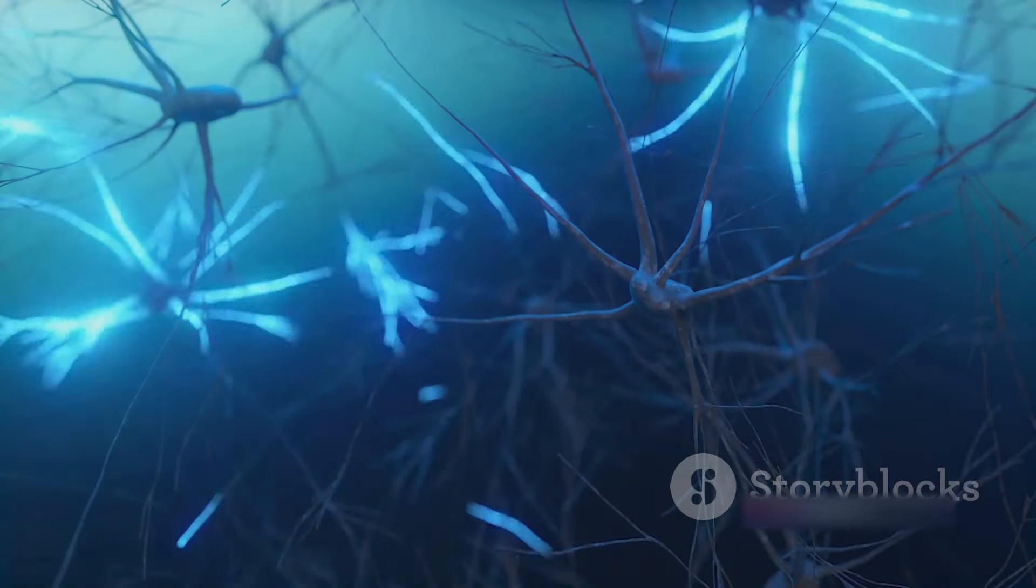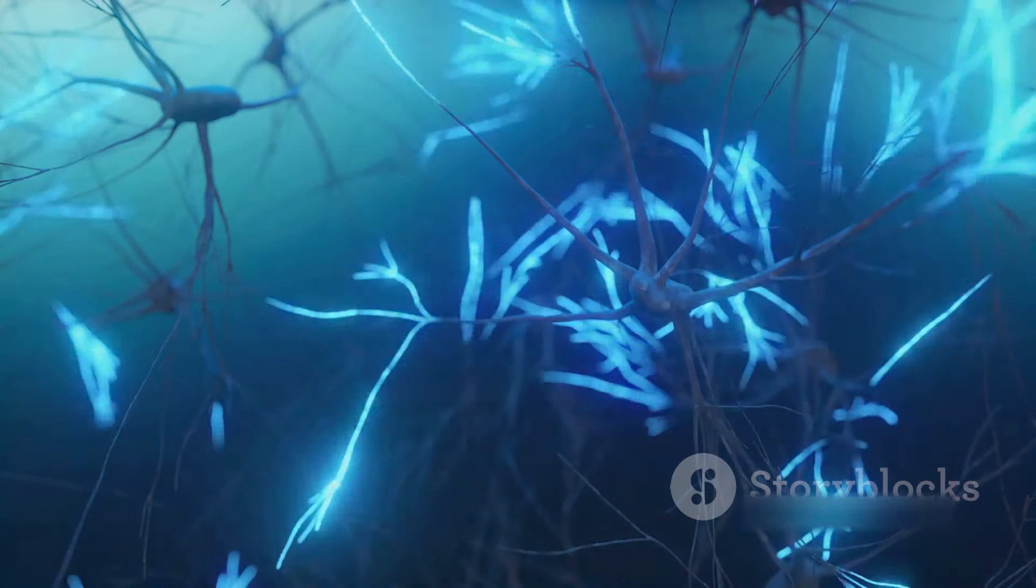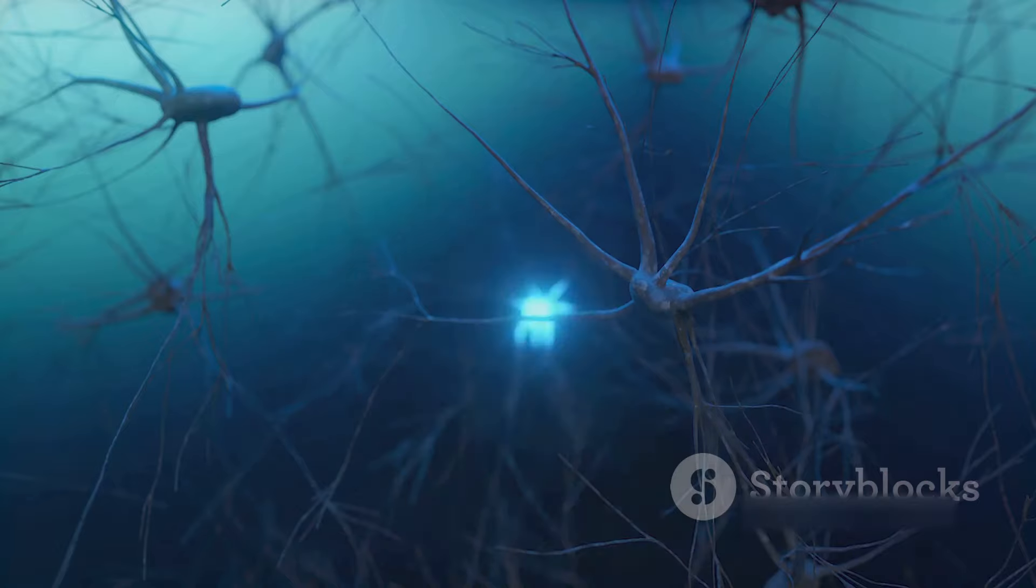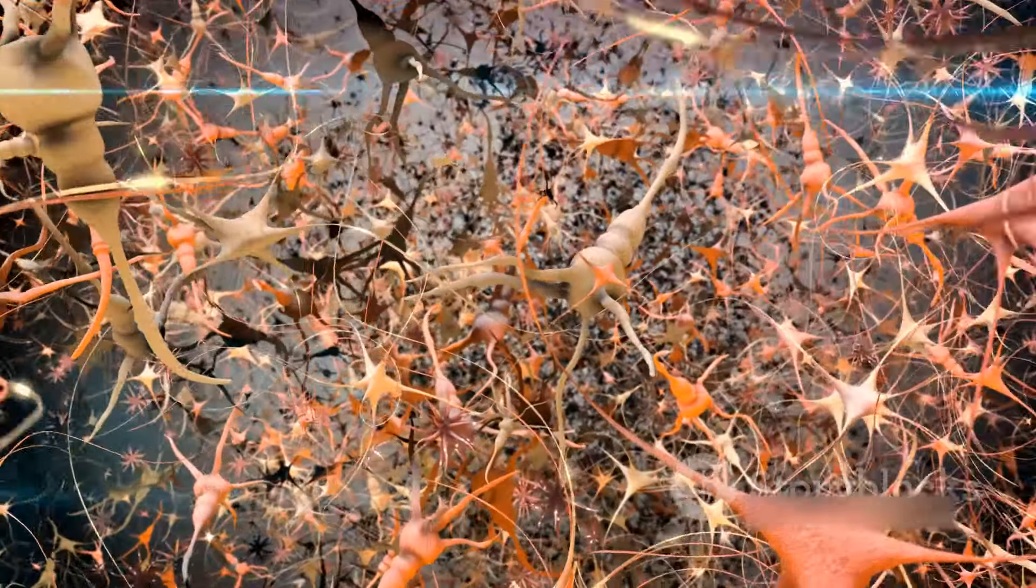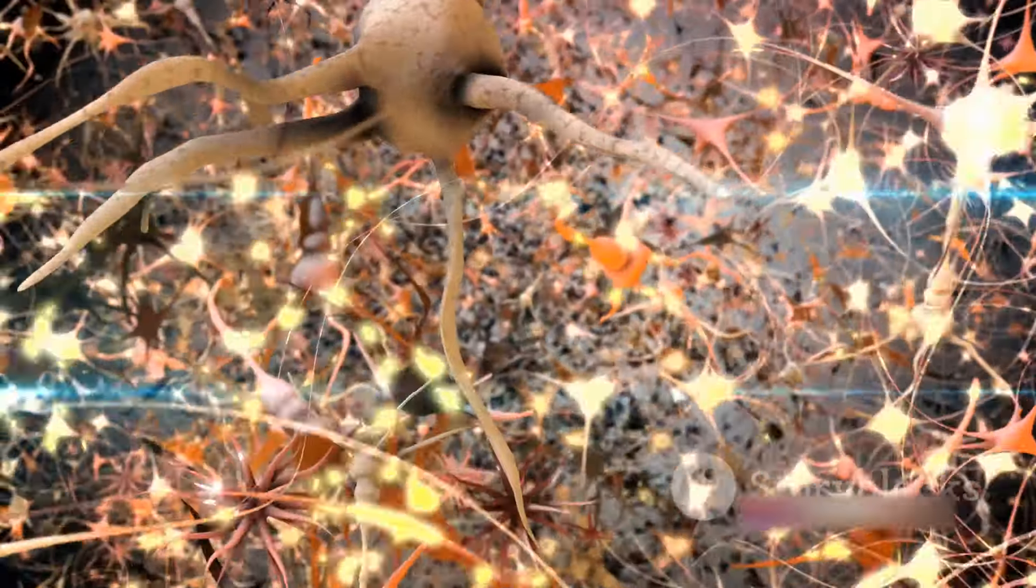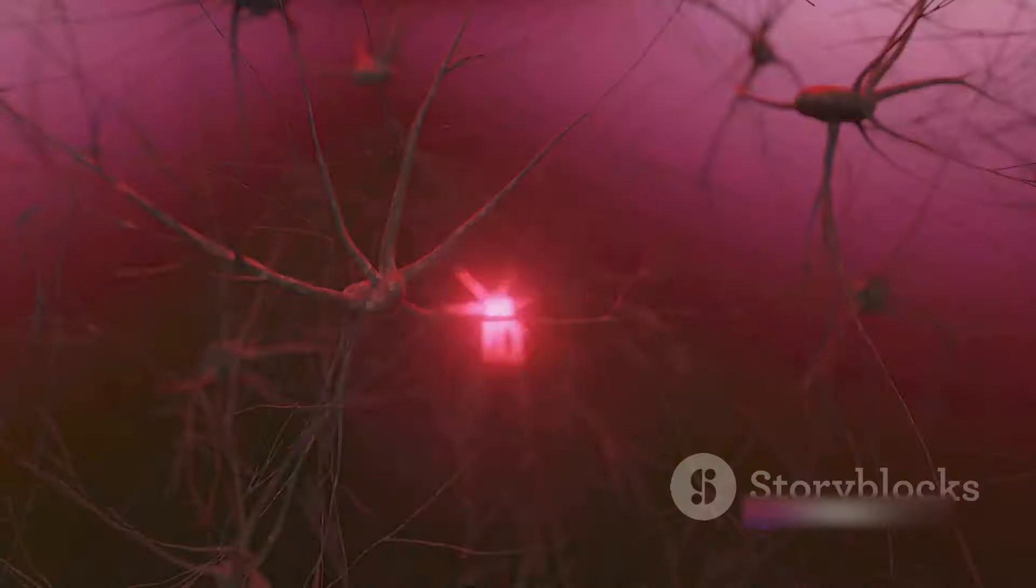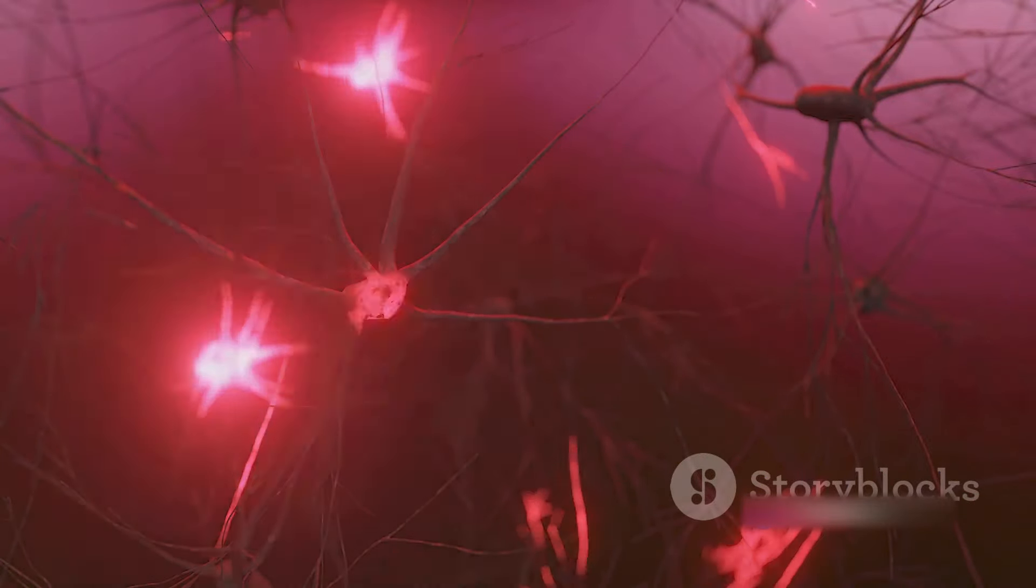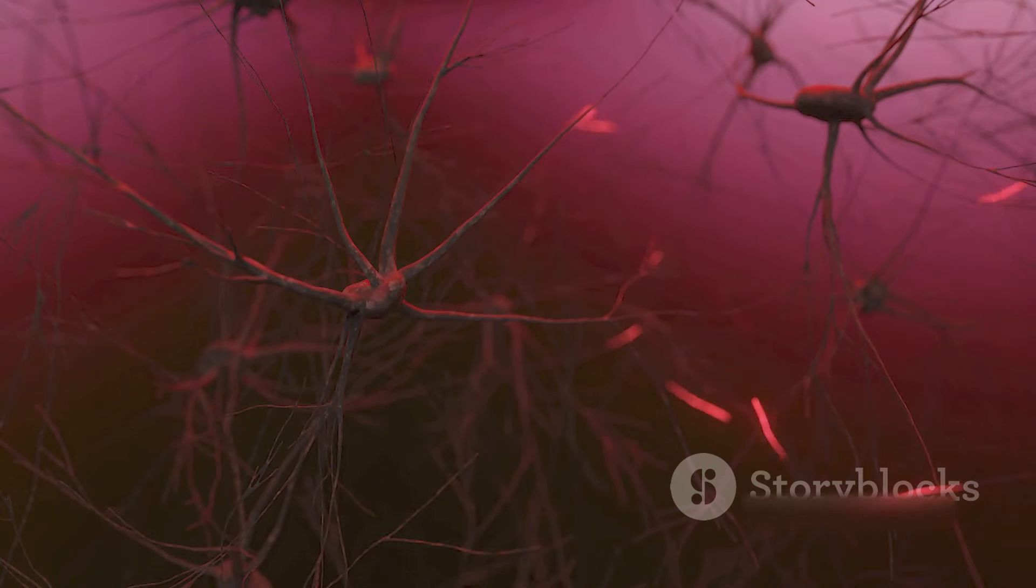But the brain isn't just about structure, it's also about function. It is a complex network of billions of neurons, connected by trillions of synapses. They buzz with activity, firing electrical signals that ricochet from neuron to neuron, creating a symphony of thoughts, emotions and actions.